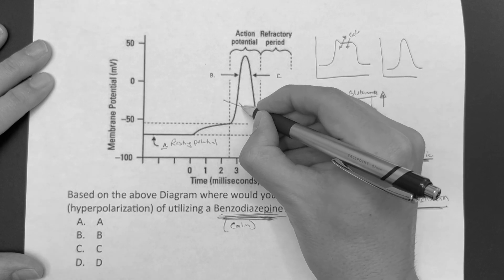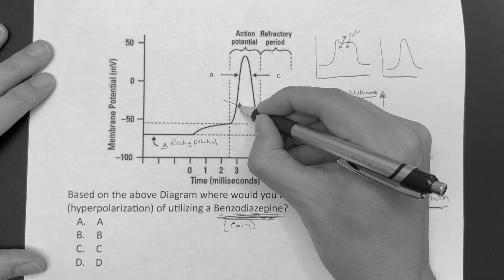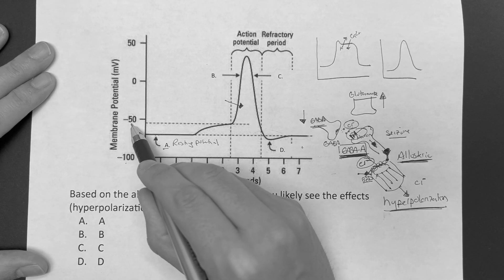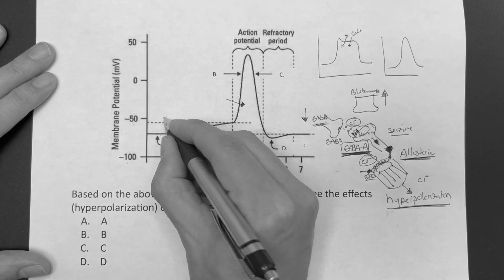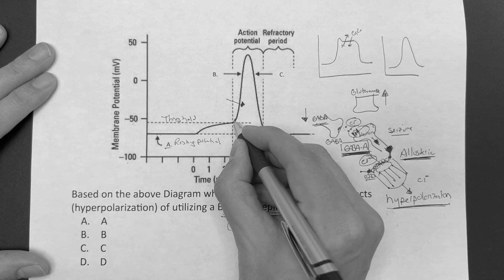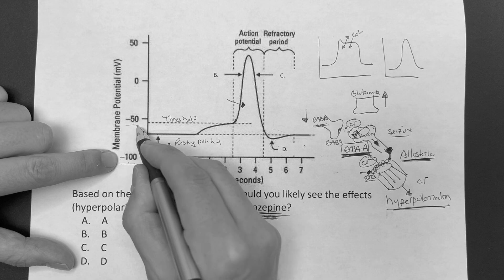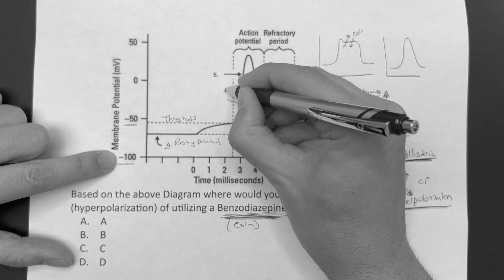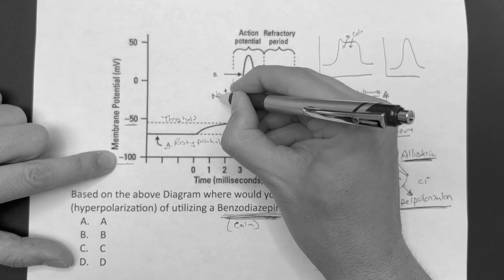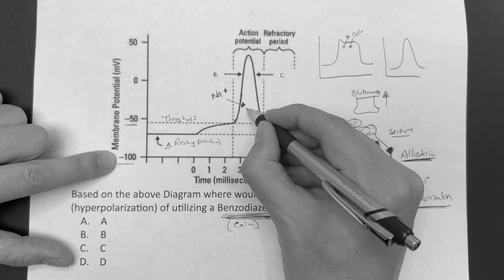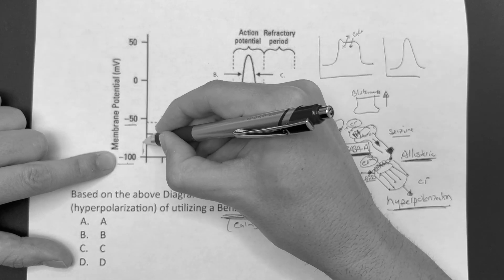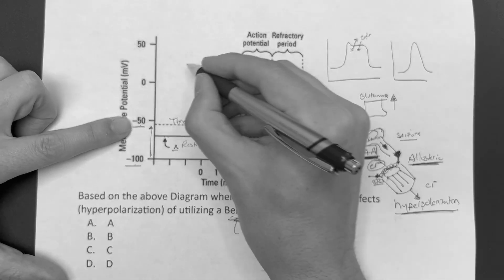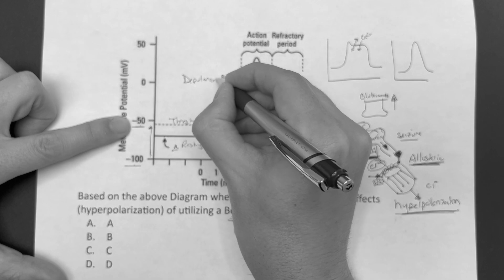As the cell climbs — going from negative 100 toward negative 50, which is the threshold — something with a positive charge is coming in. That's sodium, coming in fast, making the cell more and more positive. This phase going upward is called depolarization. Point B represents depolarization.